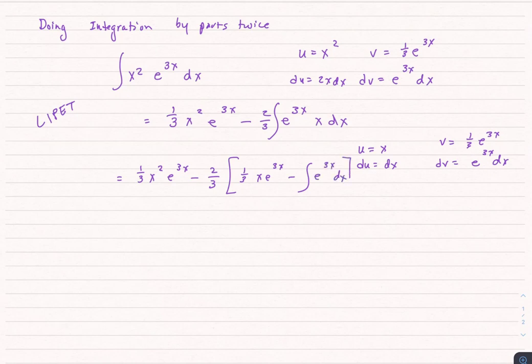Finally, 1 third x squared e to the 3x minus, and let's go ahead and do the distributive property here. This is going to be 2 ninths x e to the 3x plus 2 thirds times 1 third e to the 3x, and we'll throw in our plus C at the end. Let's try not to forget to do that.